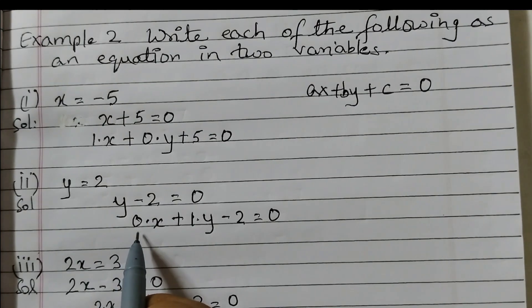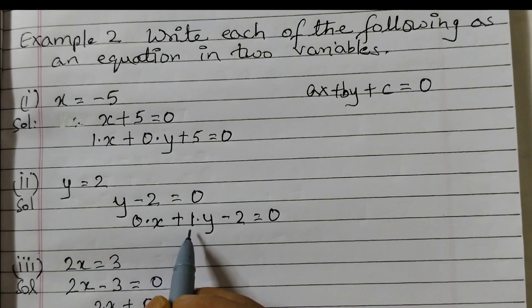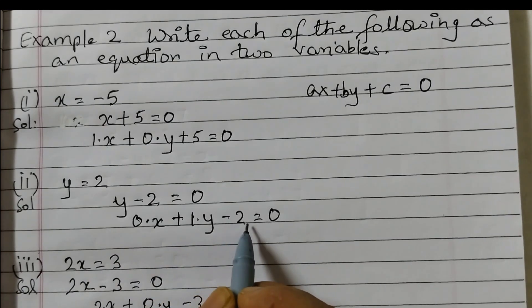Here the x term is missing so write it as 0 into x, that means this is 0 and for y this is 1 minus 2. So 0 into x plus 1 into y minus 2 equals to 0.